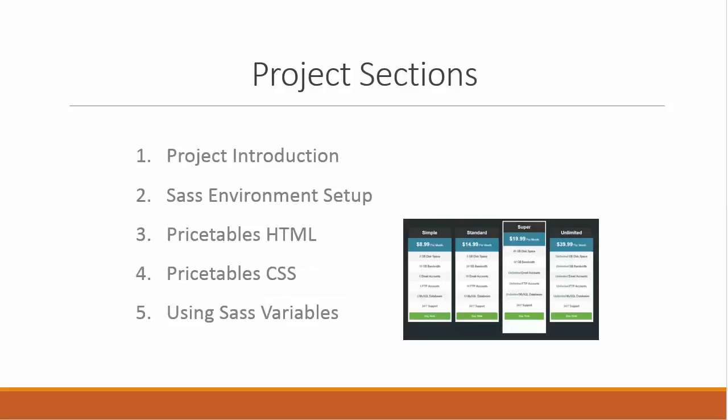The project sections: we'll have our introduction, which we're doing now. Then we're going to set up our SASS environment — installing Ruby, Dev Kit, and Scout. After that we'll move to the HTML for the pricing tables, then the CSS, and then we'll use SASS variables and other features of SASS throughout the project.